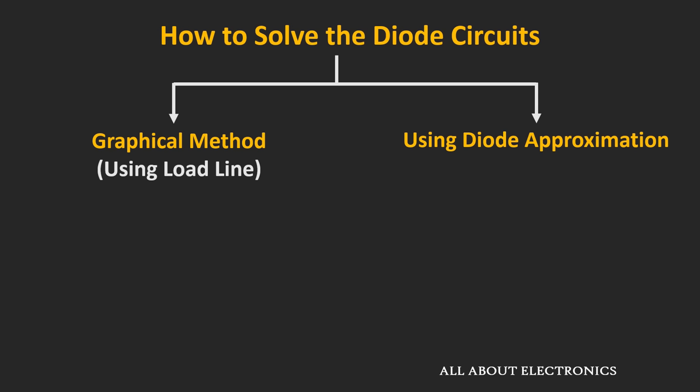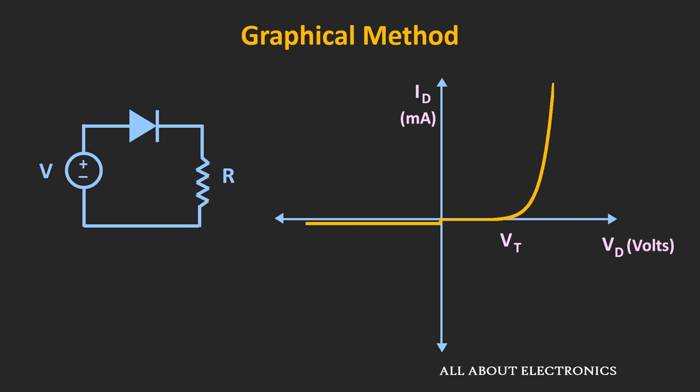So first, let's see how we can solve the circuit using the graphical method. In this graphical method, using the load line we can find the voltage and current across the diode. But first, let's understand what the load line is.